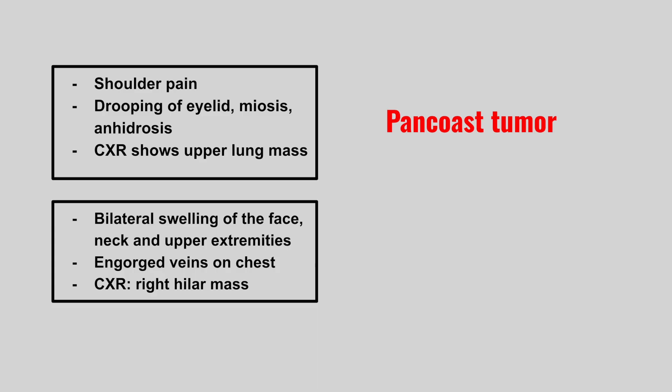The last presentation is a patient who has bilateral swelling of the face, neck, and upper extremities, with engorged veins on the chest. This is superior vena cava syndrome.